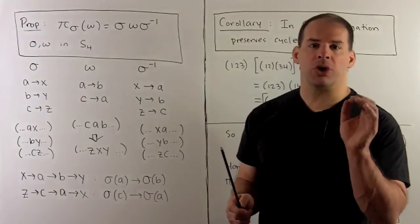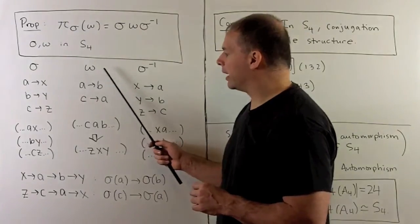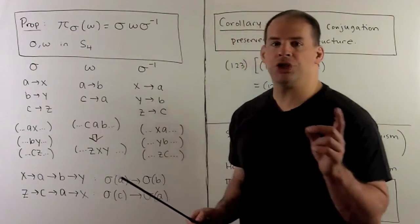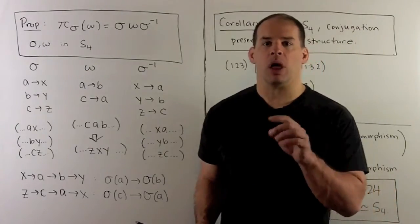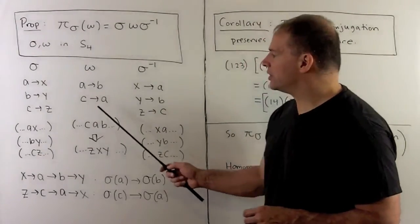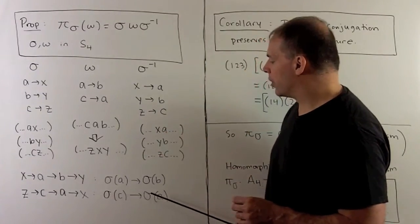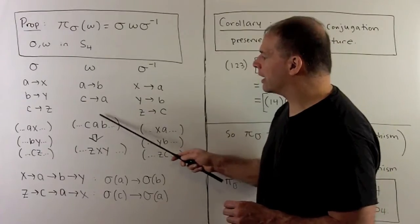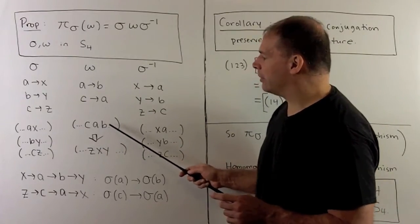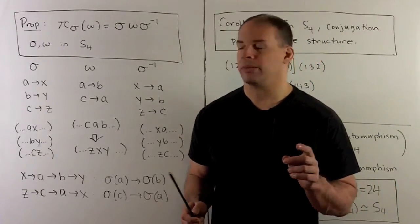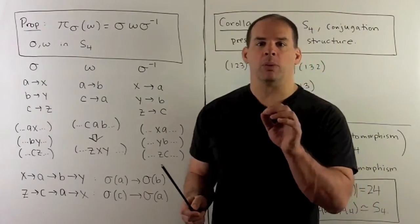What are we trying to show here? If I have A going to B in ω, then I want to show that σA goes to σB. Just to be convincing, we'll also have if C goes to A in ω, then σC goes to σA. So we'll carry this 3-block here to this 3-block here. Note C, A, and B need not be distinct.